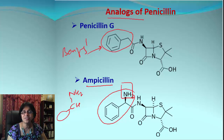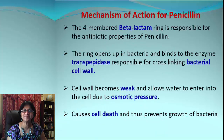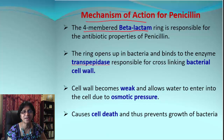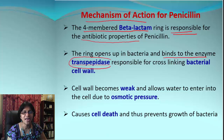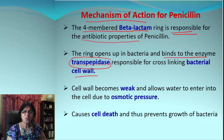Each R group variation gives some different properties to the antibiotic family. Now, how does penicillin actually work — what's the mechanism of action? The four-membered beta-lactam ring is the one responsible for all antibiotic properties of penicillin. When penicillin gets into the bacteria, it binds to the enzyme in bacteria called transpeptidase, which is responsible for the cross-linking of the bacterial cell wall.